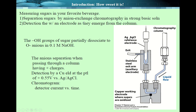Separation of sugars by ion exchange chromatography in strong basic solution — the point is that this chromatography column separates sugars, and detection is with an electrode as they emerge from the column. The OH groups of every sugar partially dissociate to oxygen anions in 0.1 molar sodium hydroxide. The anions are separated when passing through a column having positive charges. Detection is by a copper electrode at a potential of 0.55 volt, which is enough to oxidize most sugars. Then you get the chromatogram.